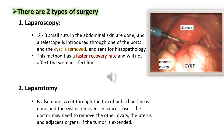Laparotomy is also performed: a cut through the top of the pubic hairline is made and the cyst is removed. In cancer cases, the doctor may need to remove the other ovary, the uterus, and adjacent organs if the tumor has extended.